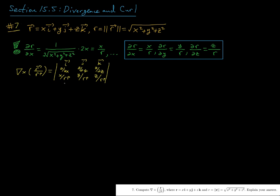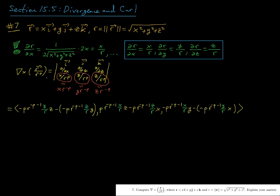So I've gone ahead and set up the curl determinant here, and when I divide this position vector by r to the p, the components are going to be x over r to the p, y over r to the p, and z over r to the p.